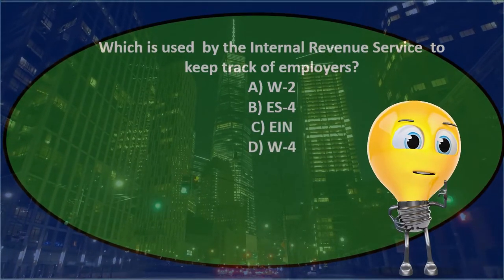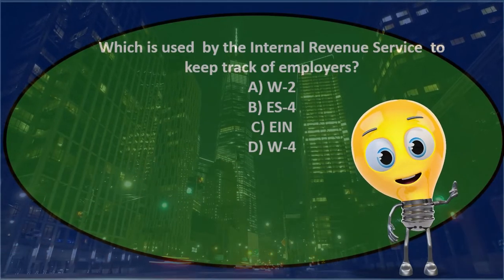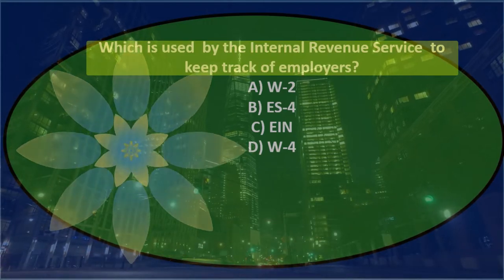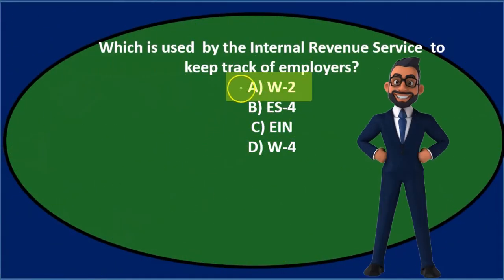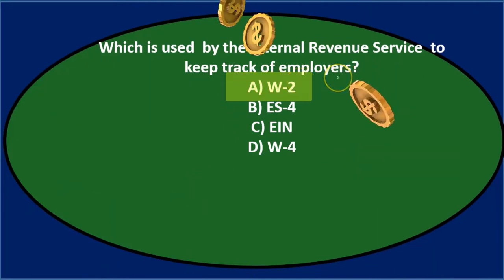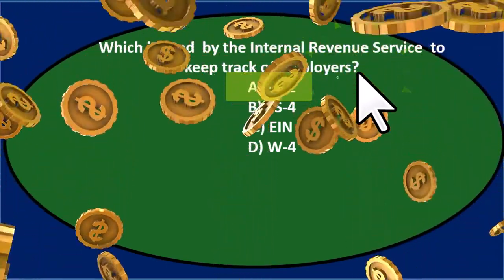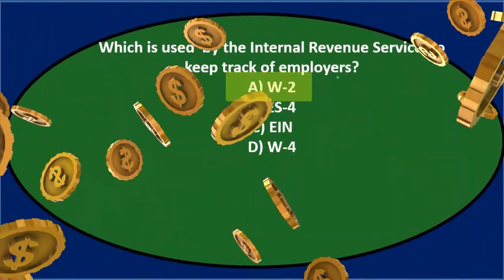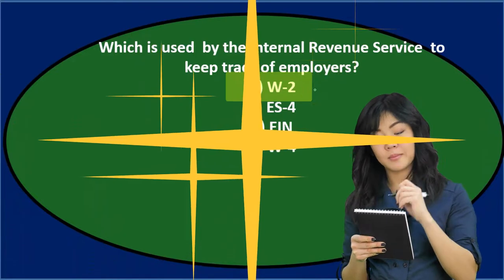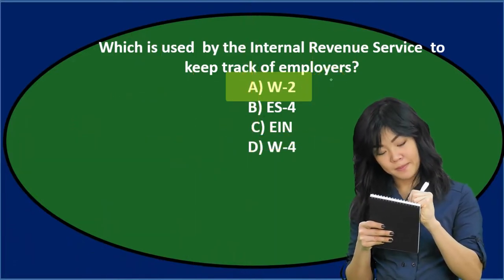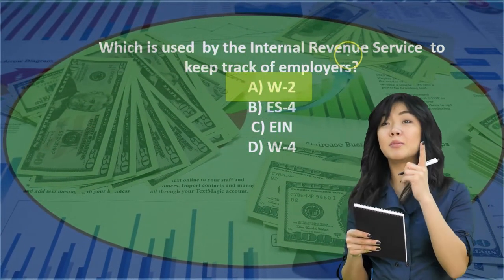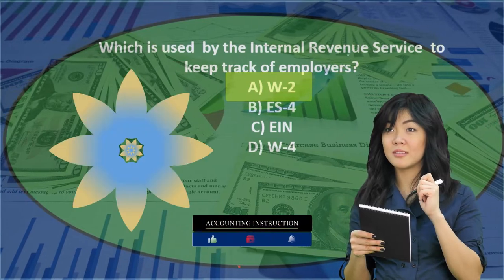Let's go through this again and see if we can use the process of elimination. Which is used by the Internal Revenue Service to keep track of employers? It's key when we read this to notice the term 'employers' — it's very easy to have a preconceived notion and misread it as 'employees.' The IRS is trying to track the employer information.